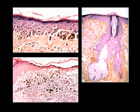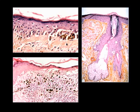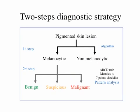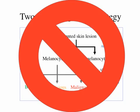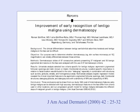That's why dermoscopy is also different. We have a flat dermal-epidermal junction, a thin epidermis, and through this thin epidermis we can see better the melanophages but also the blood vessels. The most important feature on the face is large adnexal structures that change the disposition of the pigment at the dermal-epidermal junction. That's why the original two-step diagnostic strategy used on dermoscopy is not applied on the face.